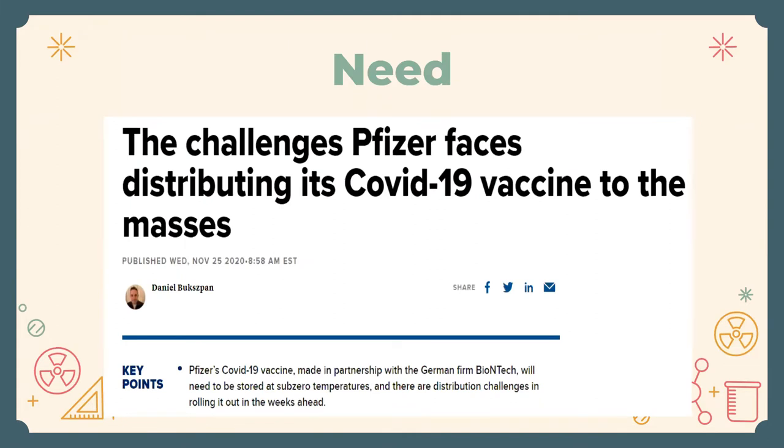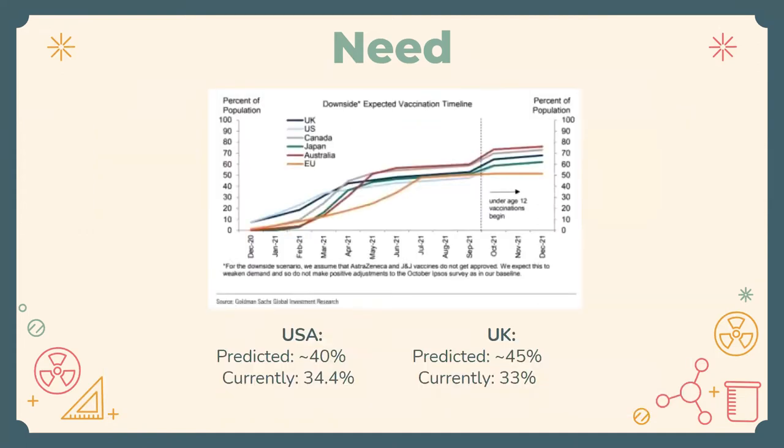For instance, Pfizer, a tech giant in USA, also faced problems storing the vaccine at sub-zero temperatures. This can be seen through the following graph, a prediction made by Goldman Sachs in October 2020, which predicted the percentage of population various countries would have vaccinated over the course of 2021. However, we see that both USA and UK fall far behind the predicted values, and one of the reasons we attribute this to is the difficulty in storing vaccines at these sub-zero temperatures.